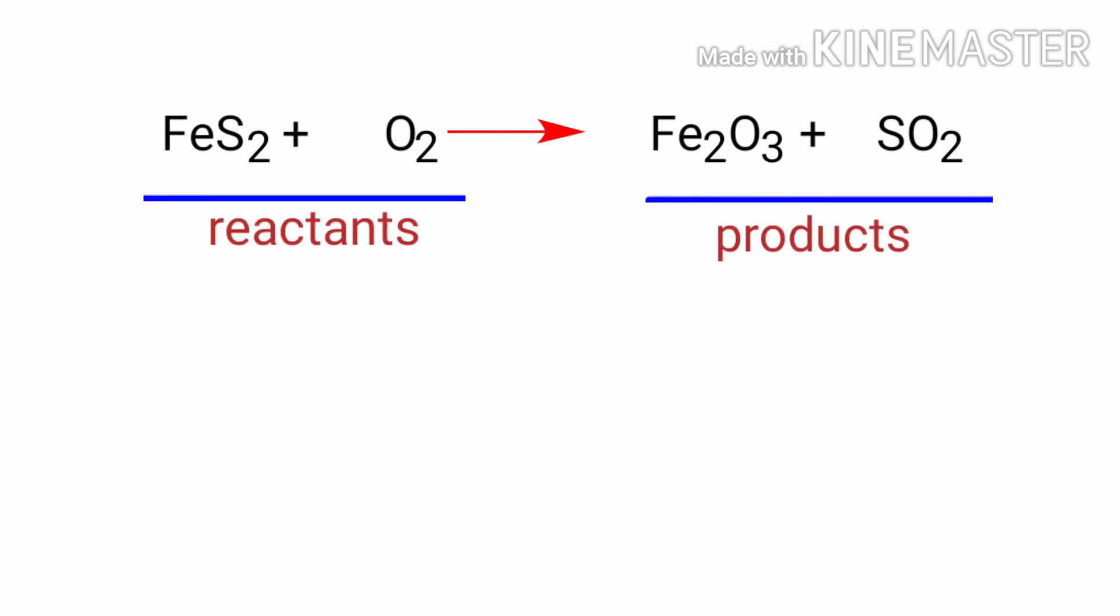In this equation, the reactants are Iron Disulfide and Oxygen and the products are Ferric Oxide and Sulphur Dioxide. If you look at this equation, the equation is not balanced.